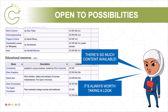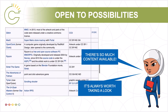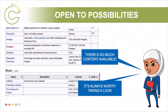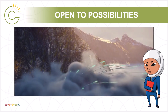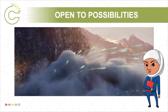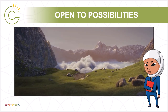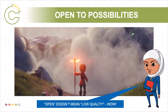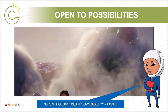One list worth noting is Wikipedia's list of major Creative Commons licensed works, which shows that even major projects like animated films can be released as open content. Some, like this short film from the Blender Foundation, are not only free to remix and reuse, but were created using open and freely available tools.